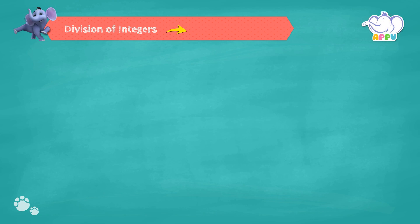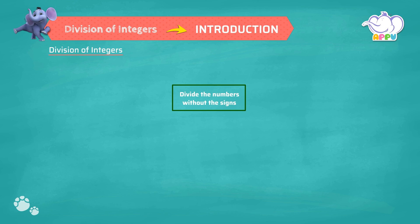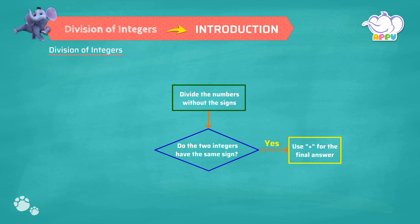Division of Integers Introduction. Let's divide integers. To divide integers, Step 1: divide the numbers without the signs. Step 2: do the two integers have the same sign? If the integers have the same sign, then use plus for the final answer. If the integers have different signs, then use minus for the final answer.